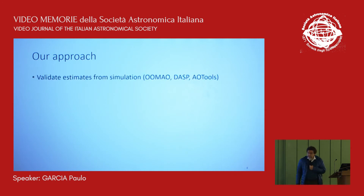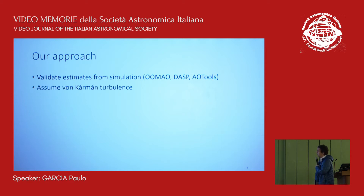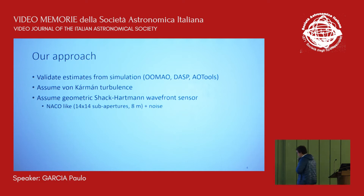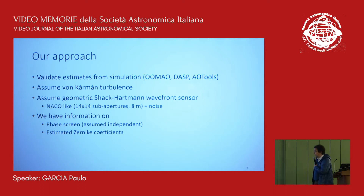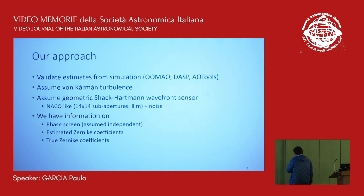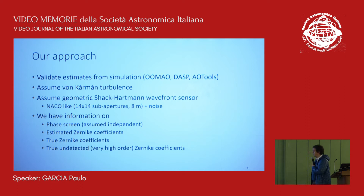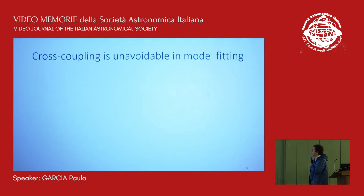What we do is a little different. We start with simulation work using OMAO and Python tools. We assume von Karman turbulence and a geometric wavefront sensor, NACO-like. In our simulation we can estimate the Zernike coefficients as seen through the Shack-Hartmann, but because we have the phase screens we also know the true Zernikes and the undetected Zernikes, because the sensor has a frequency cutoff. The first take-home message is that you have a cross-coupling problem, and there is simply no way to overcome it with a classical approach.